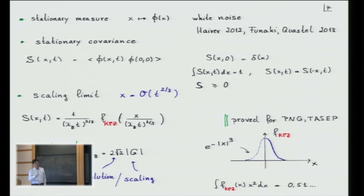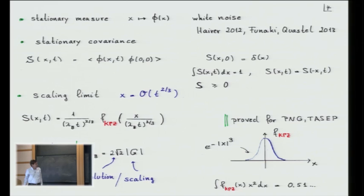That's an issue which has been studied — I put here Martin because he knows how to make sense of this equation. There's also the paper by Funaki and Quastel who studied more carefully the stationary measure for the KPZ equation. The object you want to know, as in statistical mechanics, is the stationary covariance.